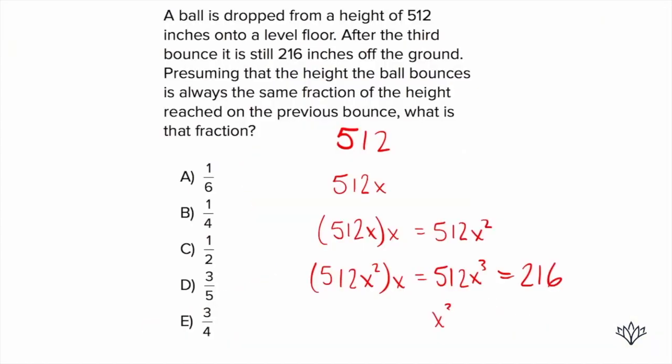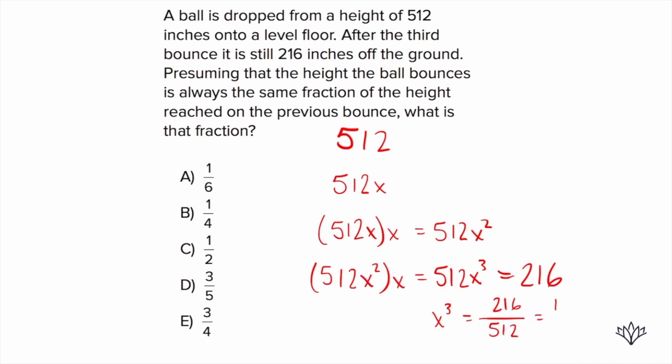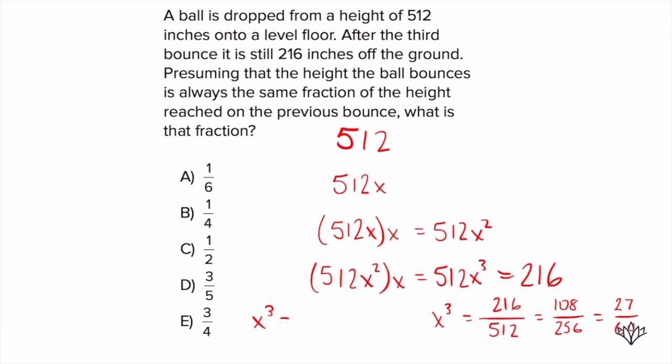Now we're going to solve for x. Let's divide both sides by 512. On the left we have x cubed, and on the right we have 216 over 512. We're going to reduce that fraction — start by dividing by 2, which gives us 108 over 256. Then divide top and bottom by 4: 108 divided by 4 is 27, and 256 divided by 4 is 64. So now we have x cubed equals 27 over 64.